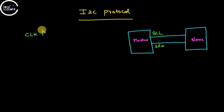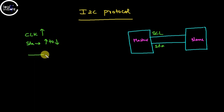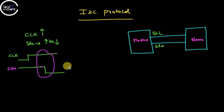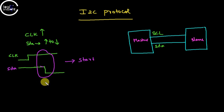Whenever the clock is high, the SDA line should go from high to low. When the clock is in a high state, the SDA line transitions from high to low — you can see that the clock is high and the SDA line goes from high to low. This condition is known as the start condition. The opposite — whenever the SDA line goes from low to high while the clock is high — is considered the stop condition.